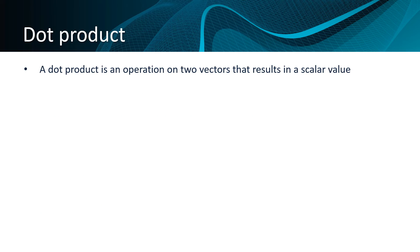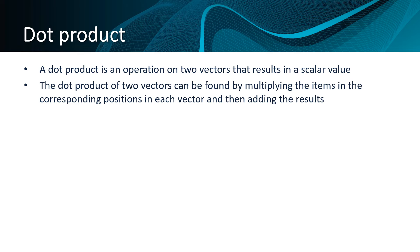A dot product is an operation that can be performed on two vectors with the same number of elements that results in a scalar value rather than a new vector. The dot product of two vectors can be found by multiplying the items in the corresponding positions in each vector, and then adding the results.